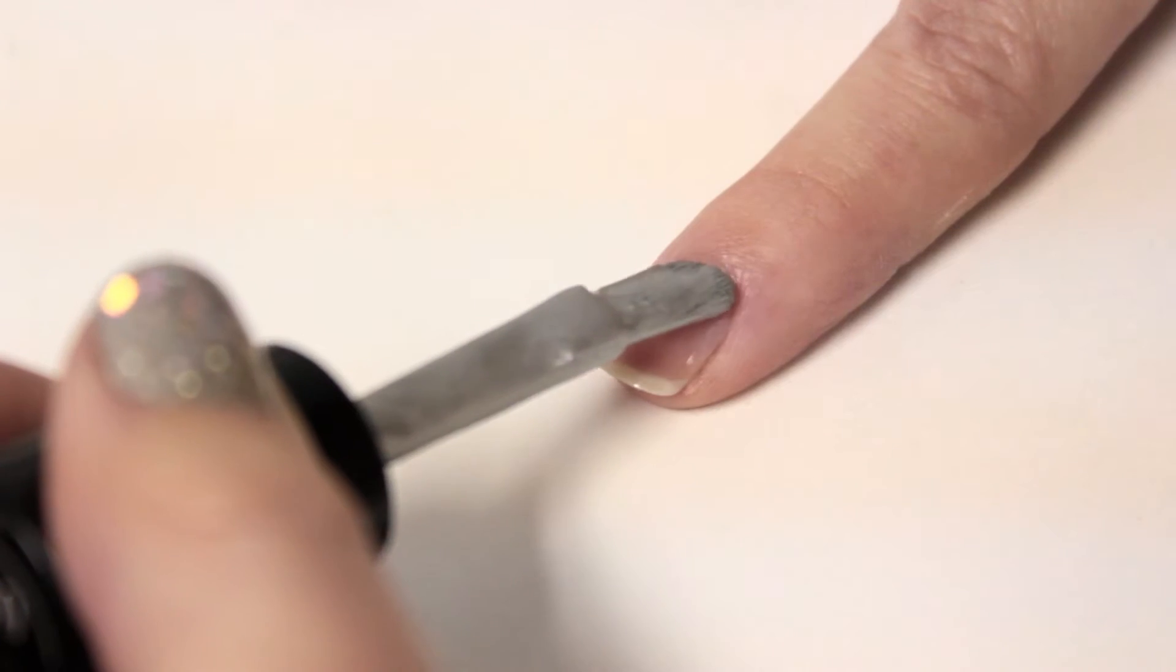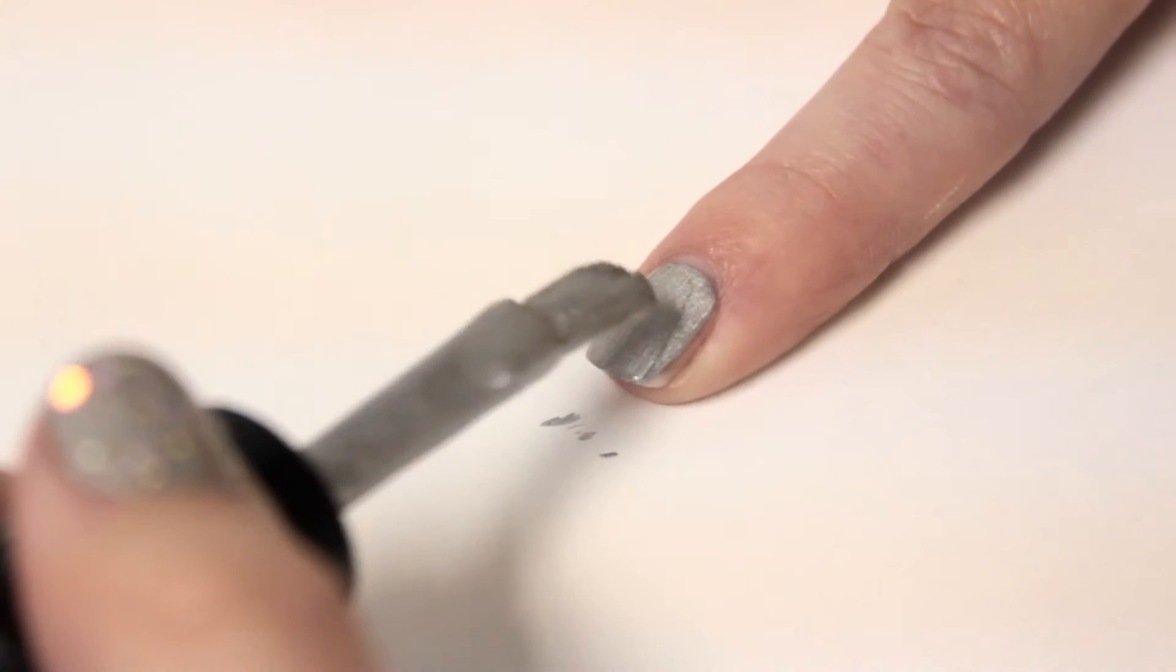Start with a base coat to protect your nail, then do a couple coats of a silver nail polish.